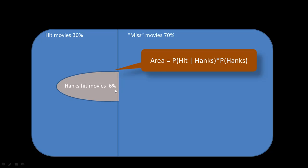Given that we know this is a Tom Hanks movie, 60% of the movies are Hits. So if you've got a movie and you know it's a Tom Hanks movie, there's a 60% chance it's a Hit. That is probability of Hit given Hanks, which is 60%. But 60% is not the area of this region — it doesn't occupy 60% of the total area. That's because this forms 60% of something which is only 10%, because Tom Hanks movies are only 10% of all movies. So the area of this region is 6% — expressed as probability of Hit given Hanks multiplied by the probability of the movie being a Hanks movie.